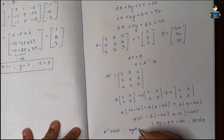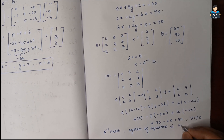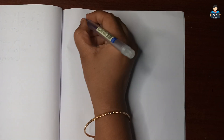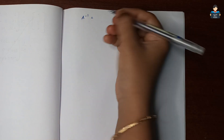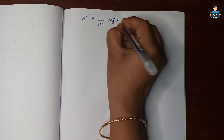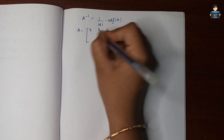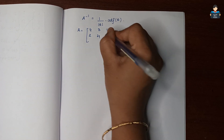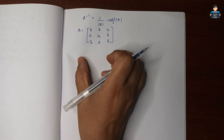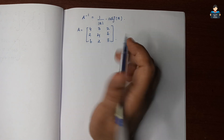A inverse = (1 / det(A)) · adjoint(A). Now we will find the cofactors, then take the transpose to find the adjoint of A. Matrix A is: [4, 3, 2 / 2, 4, 6 / 6, 2, 3].